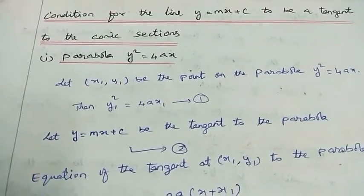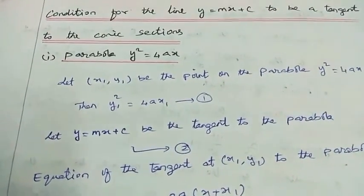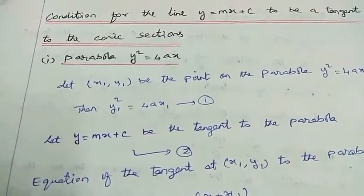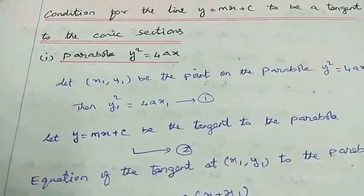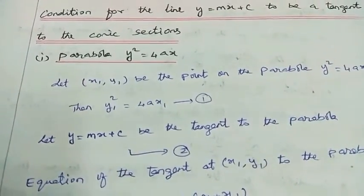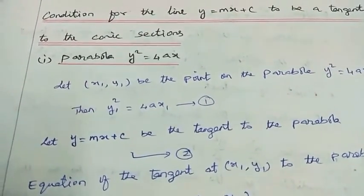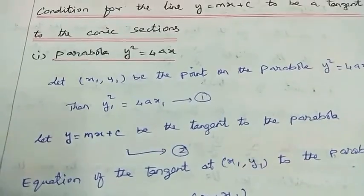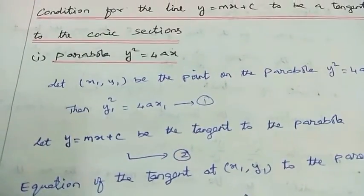Good morning. Chapter 5, Analytical Geometry. Conditions for the line y equal to mx plus b to be a tangent to the conic sections.